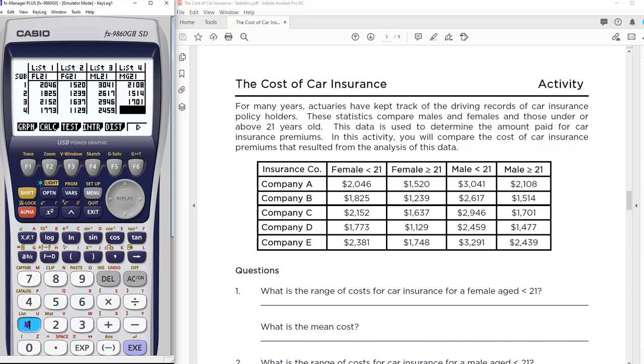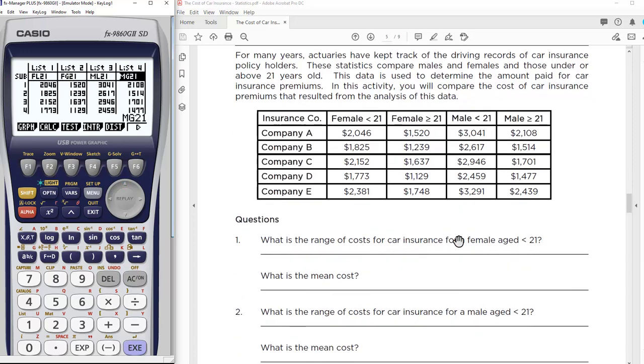Simply start typing and it goes down. Once you've entered your number, hit execute. Execute is always how you enter or set values. Now I've got my list, all my lists are in there. This activity asks them to find the range and the cost.